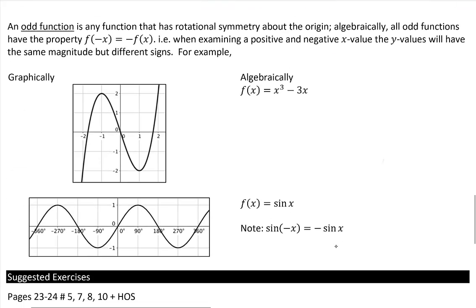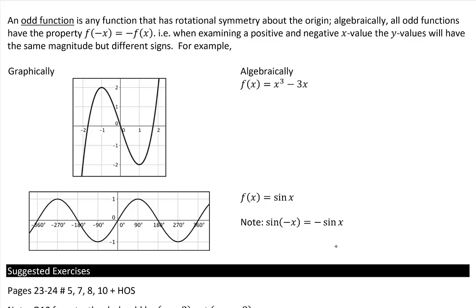Next is an odd function. An odd function is any function that has rotational symmetry about the origin. Given the odd function here, if I take one half of the graph and rotate it 180 degrees, I get the other half. Imagine rotating 180 degrees counterclockwise — we get the same image. The property of an odd function is that f(−x) = −f(x).